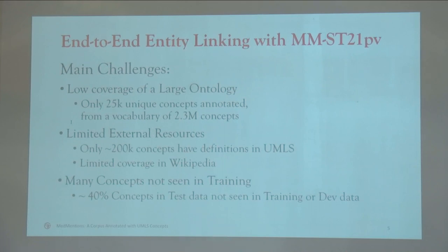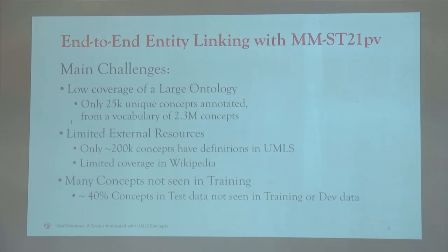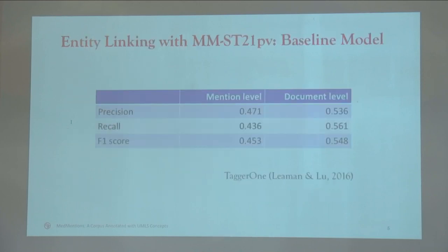The main challenges in doing concept recognition on this type of data is that there's a really large vocabulary of concepts with very limited external semantic resources. Because of the big disparity between the size of the training data and the concept vocabulary, you get a lot of concepts in the test data that you've never seen in training. So it's a very different kind of challenge from what most people study in named entity recognition and entity linking. To encourage research on this corpus, we have a baseline model based on TAGGER from NCBI, and as you can see, this model does not do very well when trained on the entire corpus of concepts.